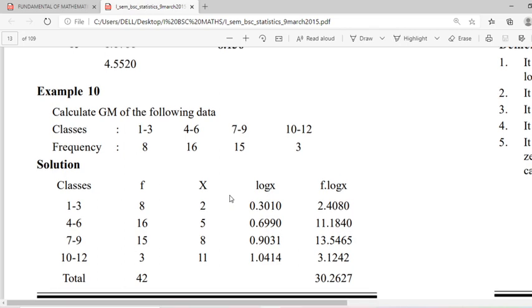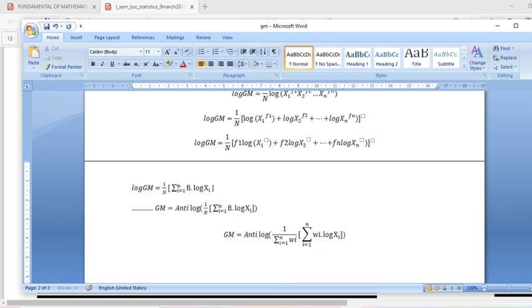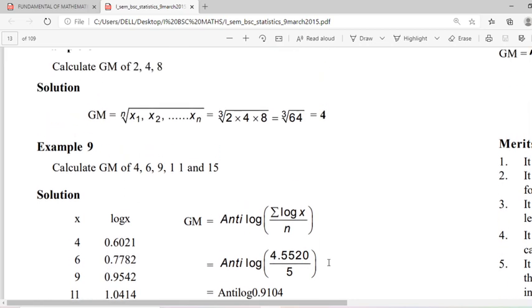Another example is class frequency data. Class is given 1 to 3, there are 8 observations. Between 4 and 6 there are 16 observations. Between 7 and 12 there are 15 observations. Between 10 and 12 there are 3 observations. The frequencies are displayed here. We have taken the central value as the observation: 2, 5, 8 and 11. Take the logarithmic value, find out the product fi log xi. So we have used this formula.